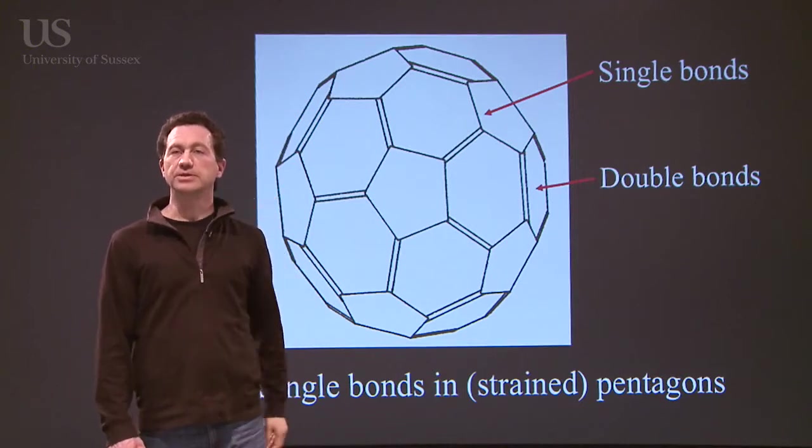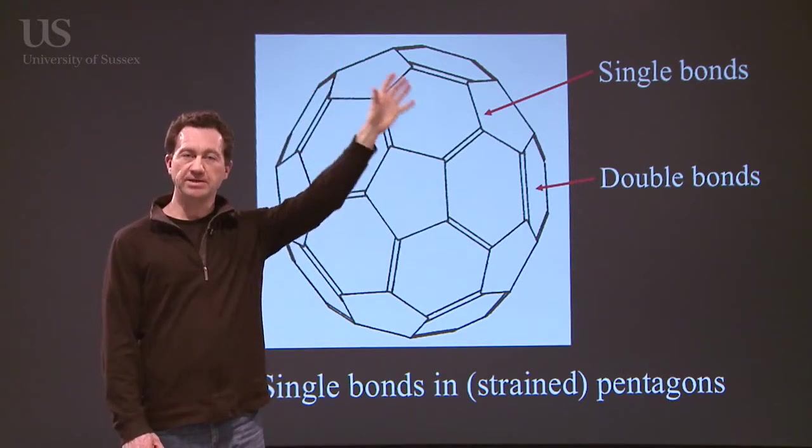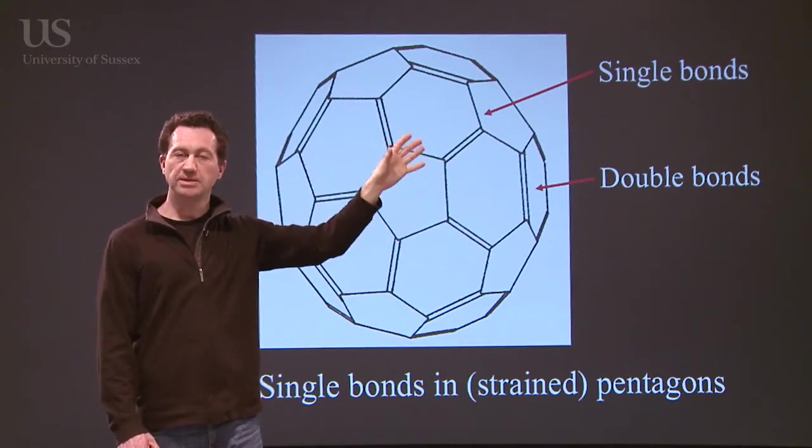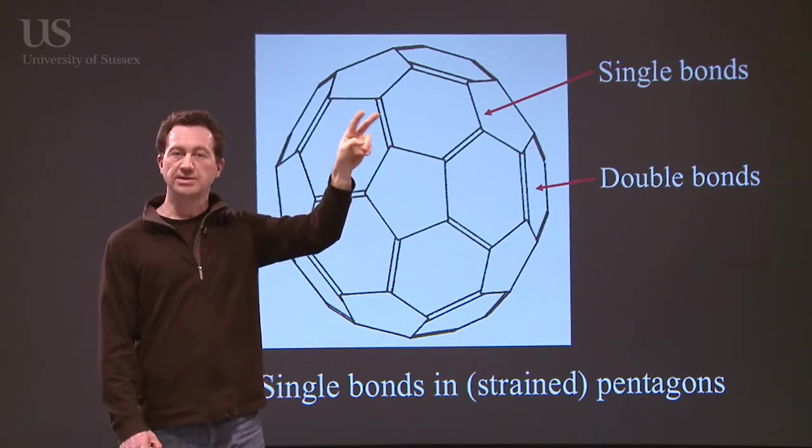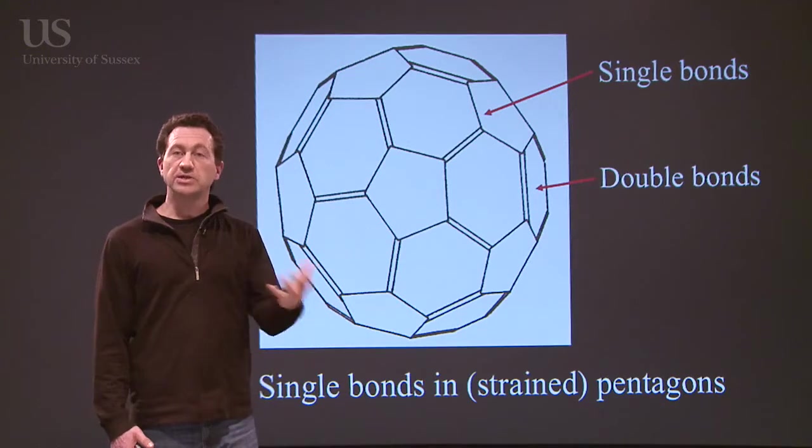There are single and double bonds. The double bonds try and keep away from the pentagons. So the single bonds are in the pentagons, the double bonds are between the pentagons, between the two hexagons. So this is the structure.